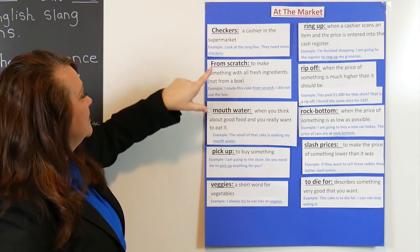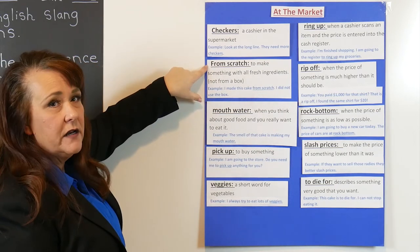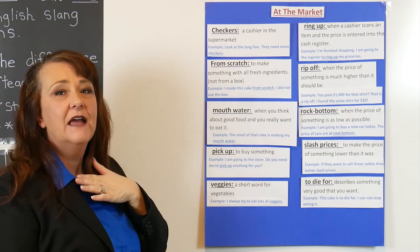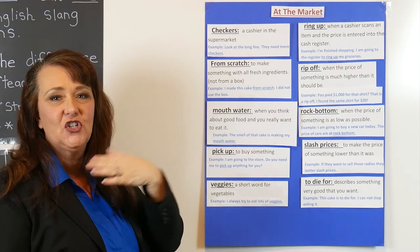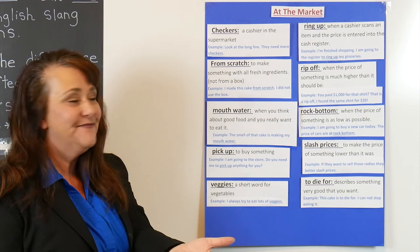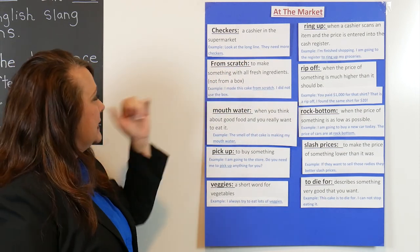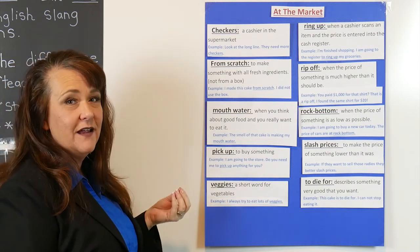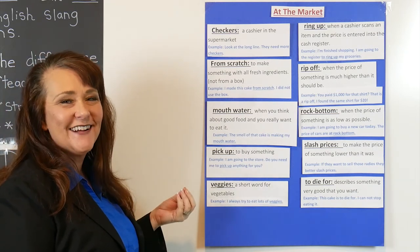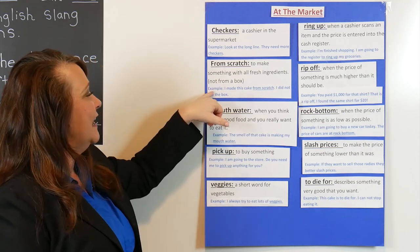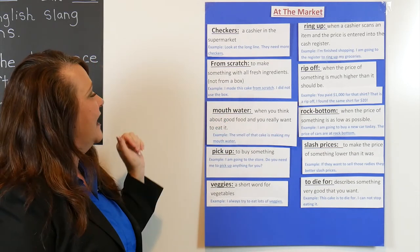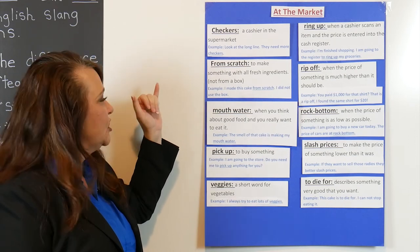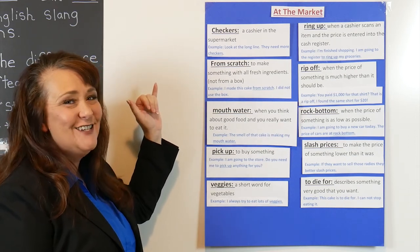The next vocabulary word is 'from scratch.' From scratch means to make something with all fresh ingredients, not from the box. An example sentence: 'I made this cake from scratch. I did not use a box.'